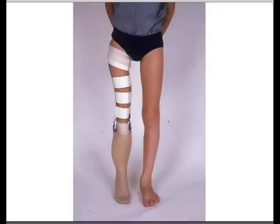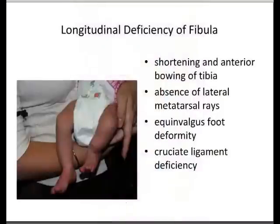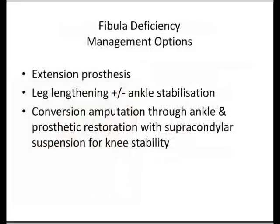In longitudinal deficiency of the fibula, there is shortening and anterior bowing of the tibia, with absence of the lateral metatarsal rays, equinovalgus foot deformity, and cruciate ligament insufficiency. Management options include an extension prosthesis with leg lengthening with or without ankle stabilisation, or a conversion amputation through the ankle.